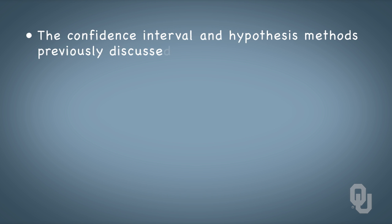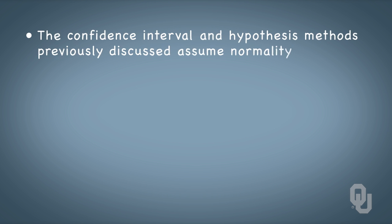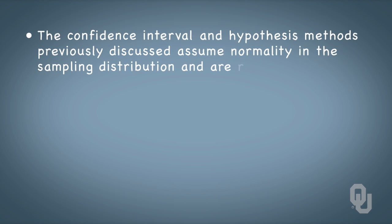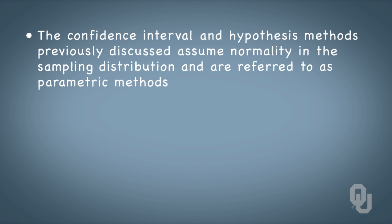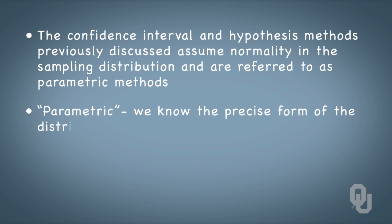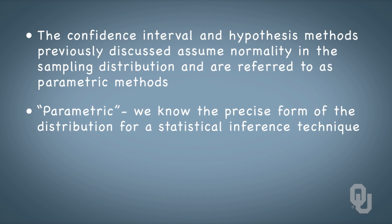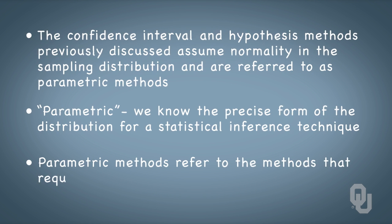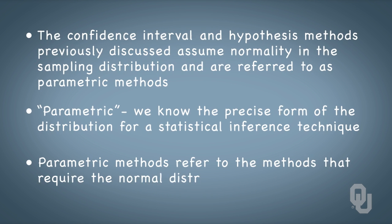The confidence interval and hypothesis testing methods that we've talked about so far assume normality in the sampling distribution and are thus referred to as parametric methods. By parametric, we mean we know the precise form of the distribution for a statistical inference technique. For the fundamental techniques we've discussed, parametric methods refer to methods that require the normal distribution. There are others that are beyond the scope of this class.